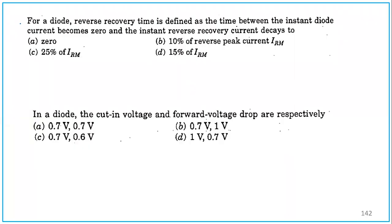Coming to the first question, which is based on a power diode reverse recovery characteristic. For a diode, reverse recovery time is defined as the time between the instant diode current becomes zero and the instant reverse recovery current decays to. Many of you might know the answer because we are studying it. The answer is 25% of IRM. I will just explain the concept of how it comes.